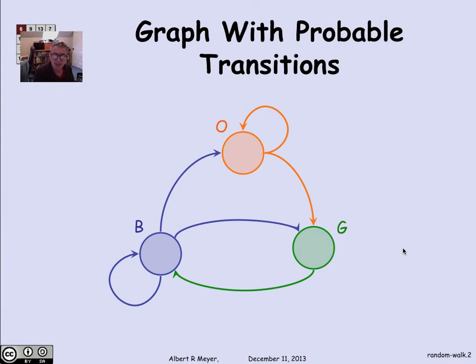The setup for a random walk is that you have a digraph. We can also think and talk about the digraph as though it was a state diagram for a machine with states. So here's a three-state digraph: blue, orange, and green.